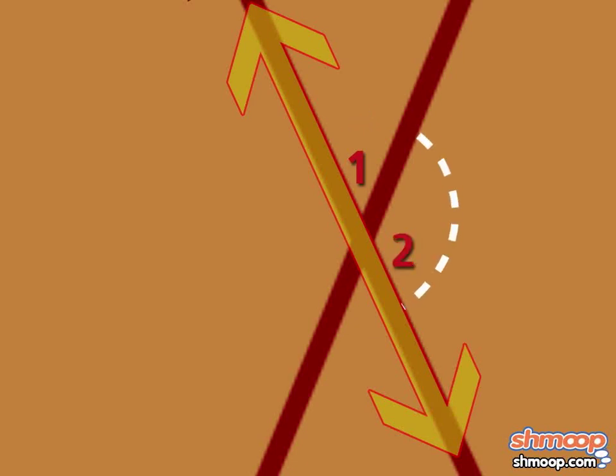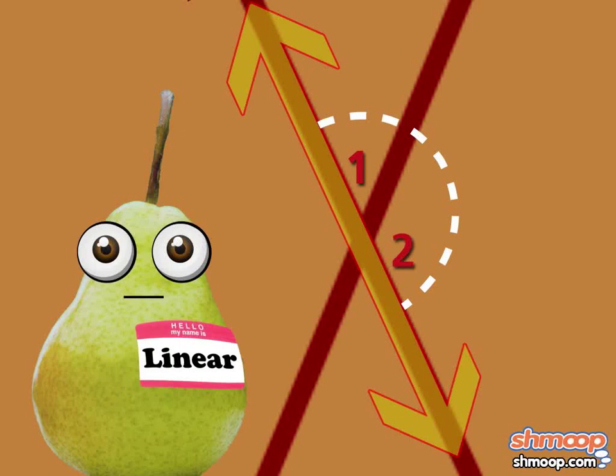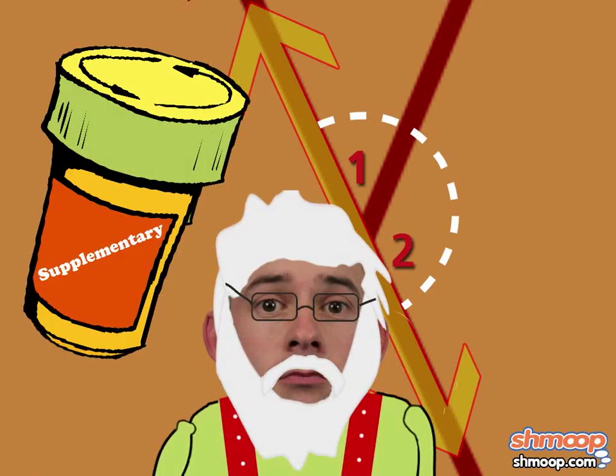That means our top angle plus this angle on the side make a linear pair. Two angles that are supplementary and adjacent.